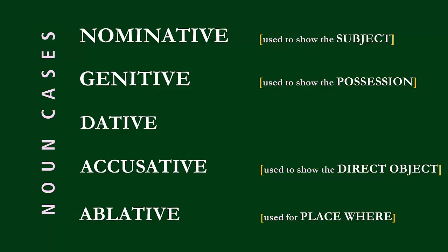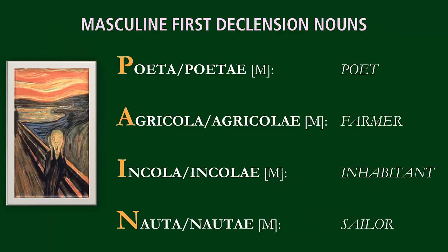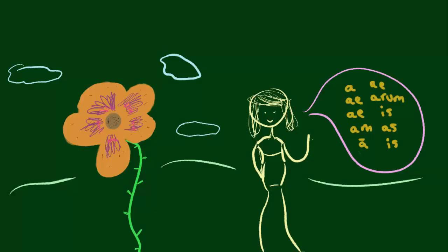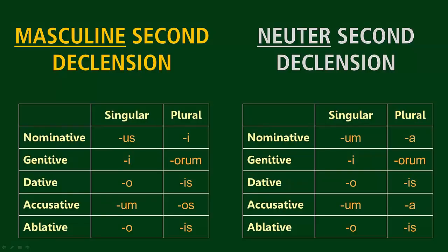Let's remember that first declension nouns, with the exception of the pain nouns, are all feminine. Second declension nouns, however, come in two genders. There are masculine second declension nouns, and neuter second declension nouns.